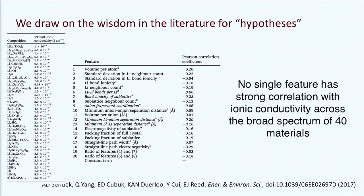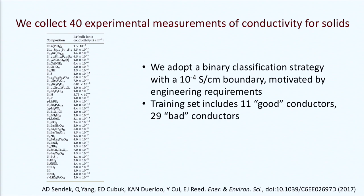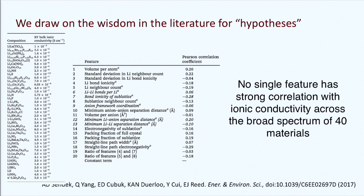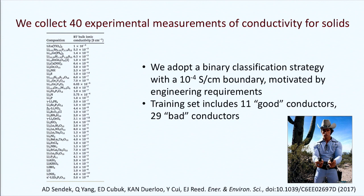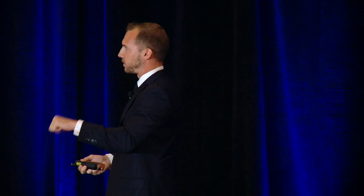Our hope is that if we can find a clever way to combine these features together — and here's where machine learning comes in — we can get more predictive power. We adopt a binary classification strategy: if a material is a good ion conductor, we give it a thumbs up; if not, a thumbs down. That breaks our training set into 11 good conductors and 29 bad conductors. We assume a logistic form — logistic regression — which is appropriate for small data sets like 40 data points.